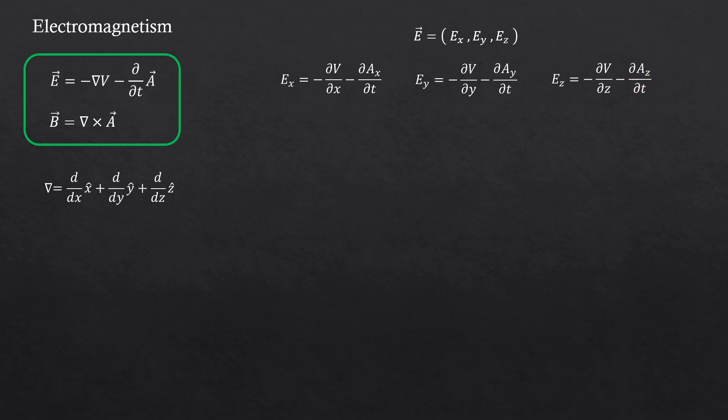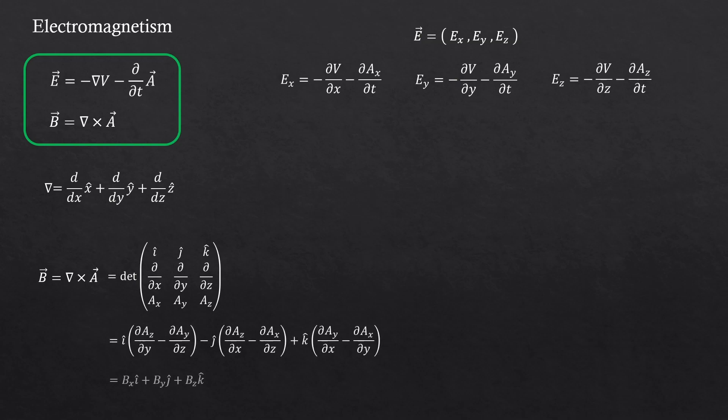Now the second expression. This is the curl of A, right? From linear algebra. Curl of A is this. And as you can see, this also has three different components. So, so far so good.